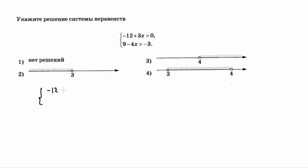Второе неравенство: 9 минус 4x больше минус 3. Мы должны числа собрать в правой части, а неизвестные — в левой. Поэтому 3x остаётся в левой части, знак не меняется, больше. При переходе через знак неравенства минус 12 меняет знак на противоположный, как и в обычном уравнении.